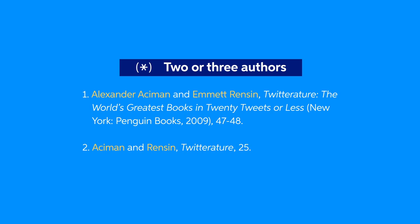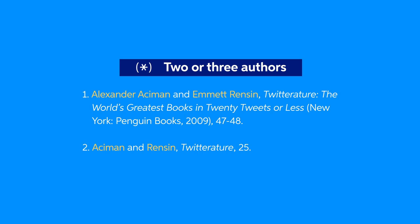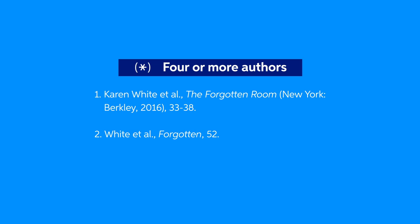If you have a source with two or three authors, list their names in the order they appear on your source, with the word AND or a comma in between. If a source has more than four authors, instead of listing each author's name, just write the first author's name, followed by the Latin term et al., which means 'and others.'